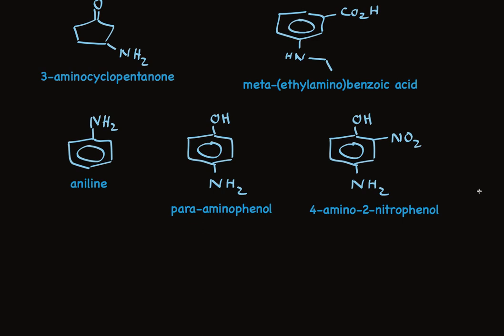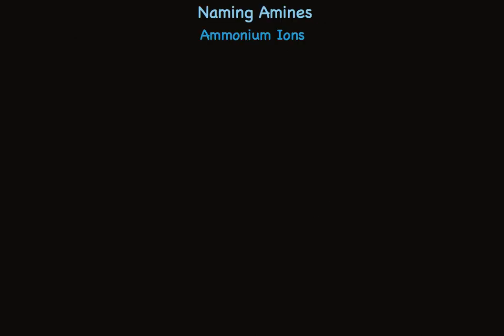When we have three things attached to the ring, we switch to the numbering system for systematic nomenclature. It's a phenol, which is always carbon 1, so we don't have to use that number. We'll number clockwise because that gets us to a substituent first — the nitro group on the 2-carbon, and the amino group on the 4-carbon. But we put them in alphabetical order, so 4-amino comes before 2-nitro.